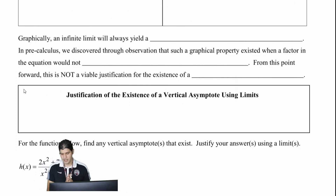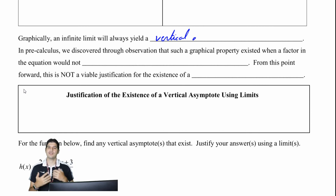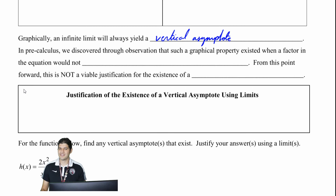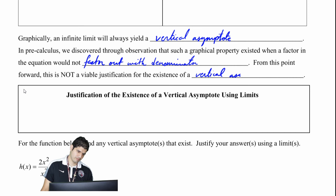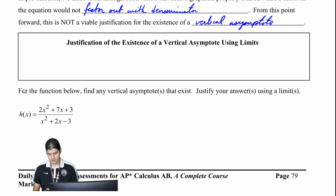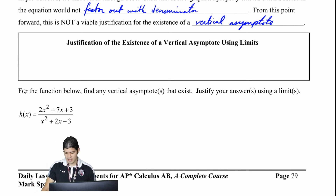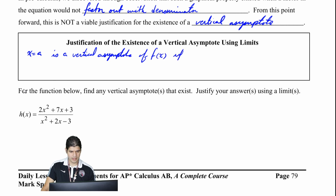So graphically, an infinite limit will always yield a vertical asymptote. In pre-calculus, we discovered through observation that such a graphical property existed when a factor in the equation would not factor out. But from this point forward, that is not going to be a viable justification for the existence of a vertical asymptote. Instead, we're going to have to bring in limits. x equals a is a vertical asymptote of f of x if and only if the limit of f of x as x approaches a equals positive or negative infinity.